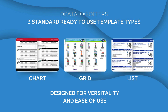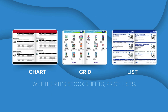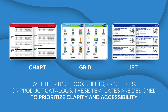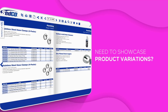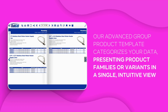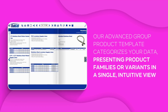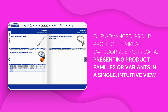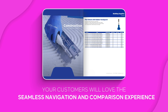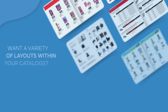Designed for versatility and ease of use, whether it's stock sheets, price lists, or product catalogs, these templates prioritize clarity and accessibility. Need to showcase product variations? Our advanced group product template categorizes your data, presenting product families or variants in a single intuitive view. Your customers will love the seamless navigation and comparison experience.